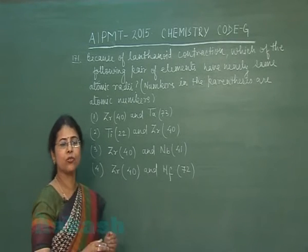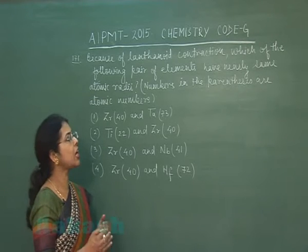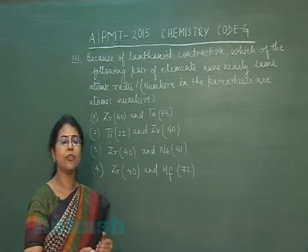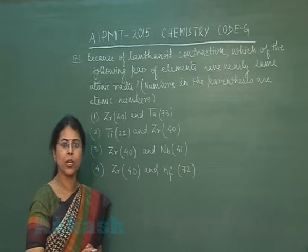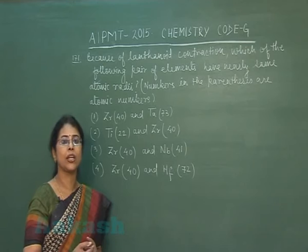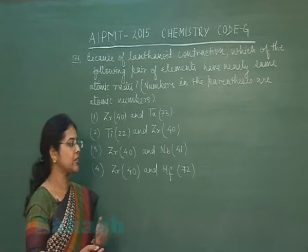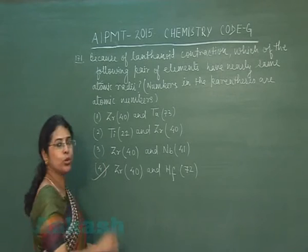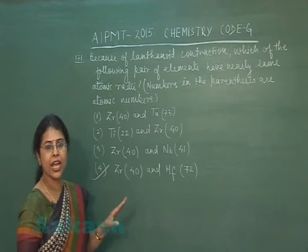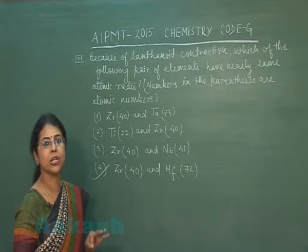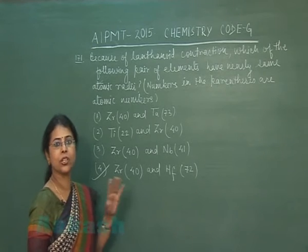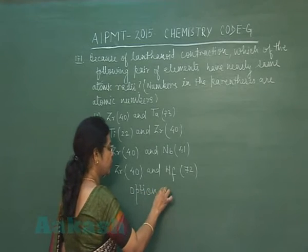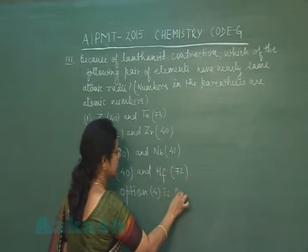This is a straightforward question. The effect of lanthanoid contraction is seen in members of the 5d and 6d series. So the answer must involve an element from 5d and 6d. Zirconium and Hafnium have similar size due to lanthanoid contraction, so option 4 is correct.